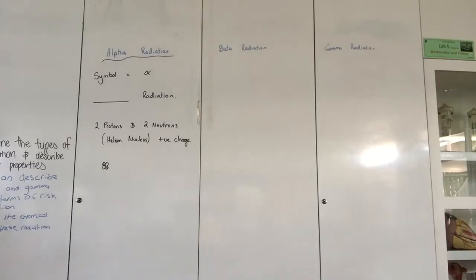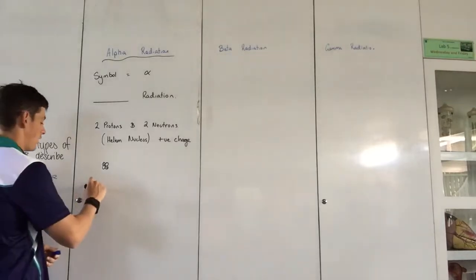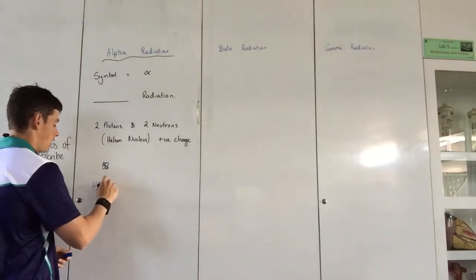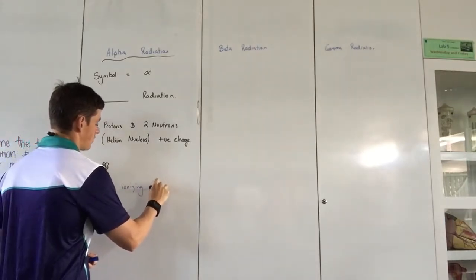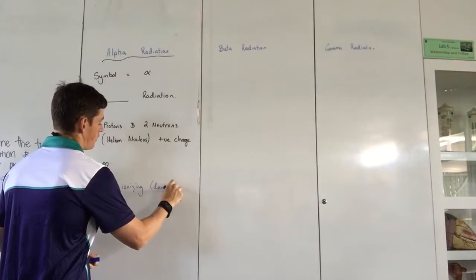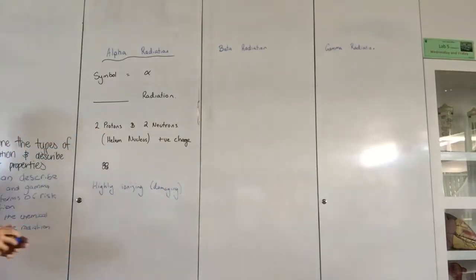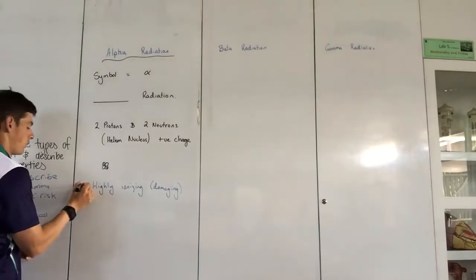So that's what our alpha particle is. Now it's the most ionising, which means the most damaging, so highly ionising. This will do the most ionisation to an atom. They will affect the electrons of the atom the most. So it's highly ionising.